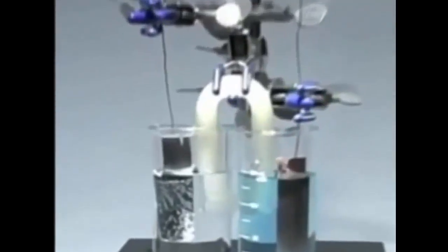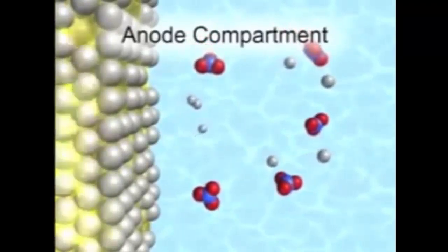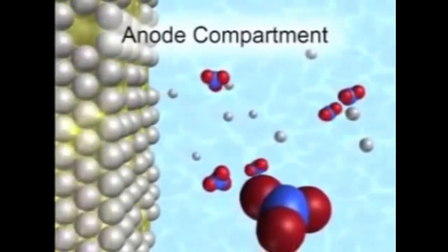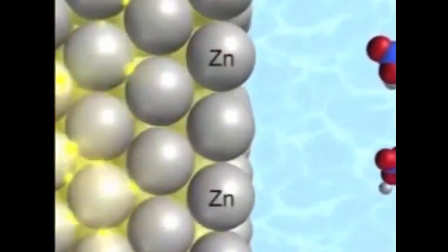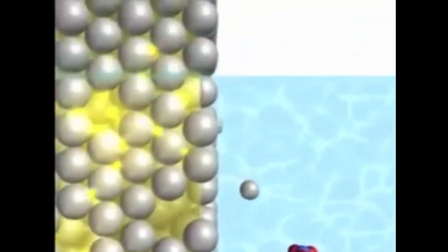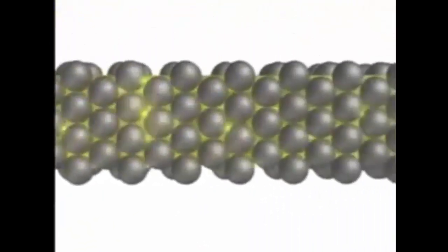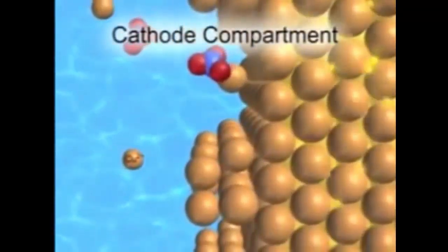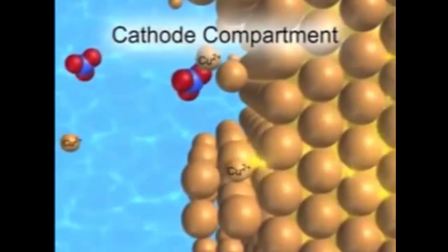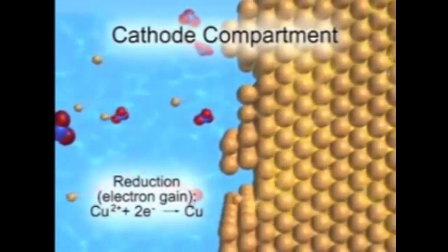Let's zoom into the atomic scale to see how the cell operates. At the anode, the site of oxidation, zinc atoms in the metal bar contact the surrounding electrolyte solution. Each atom loses two electrons and becomes a zinc ion, which diffuses into the solution. The electrons enter the bar and flow up into the external circuit, travel through the wire, and flow into the cathode. When a copper(II) ion in the cathode solution contacts the copper electrode, it gains two electrons and is reduced to a copper atom, depositing on the bar. As the cell runs, the zinc anode becomes lighter and the copper cathode heavier.